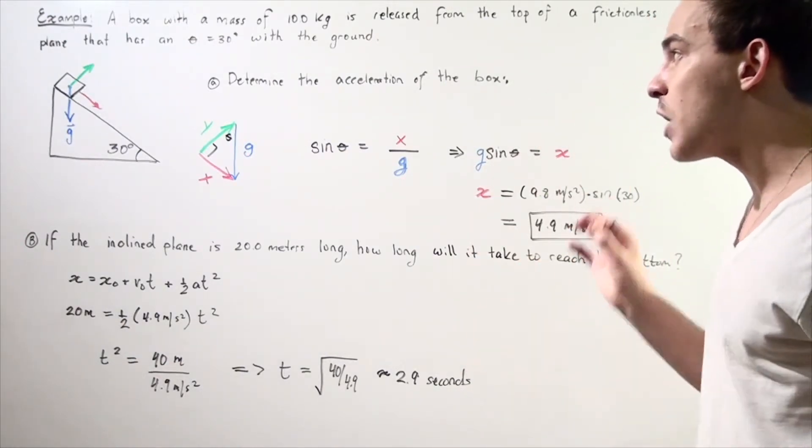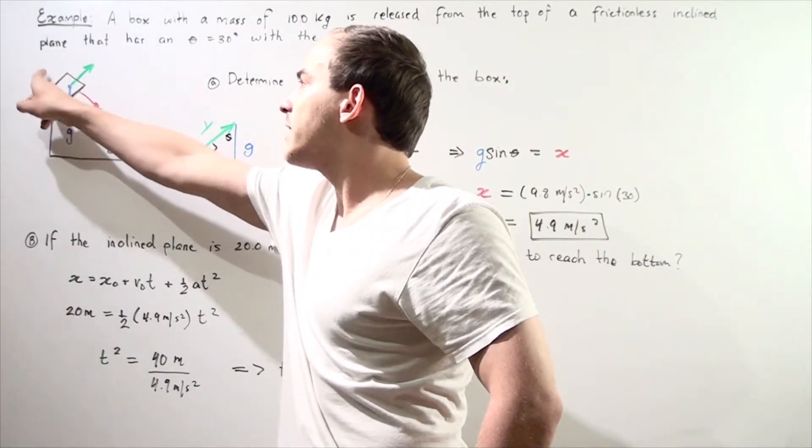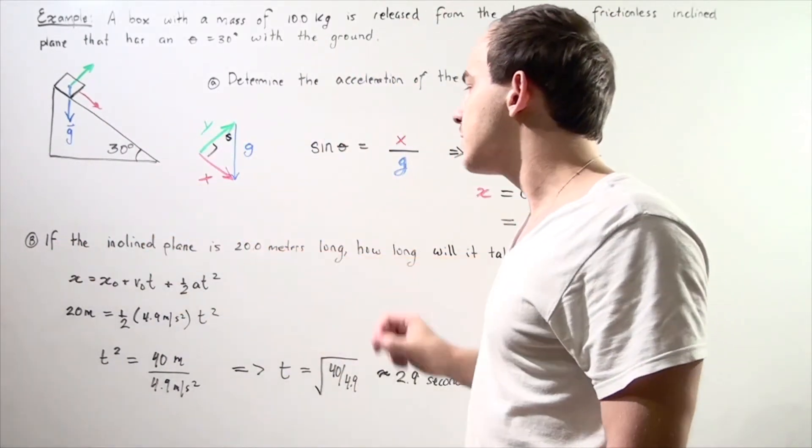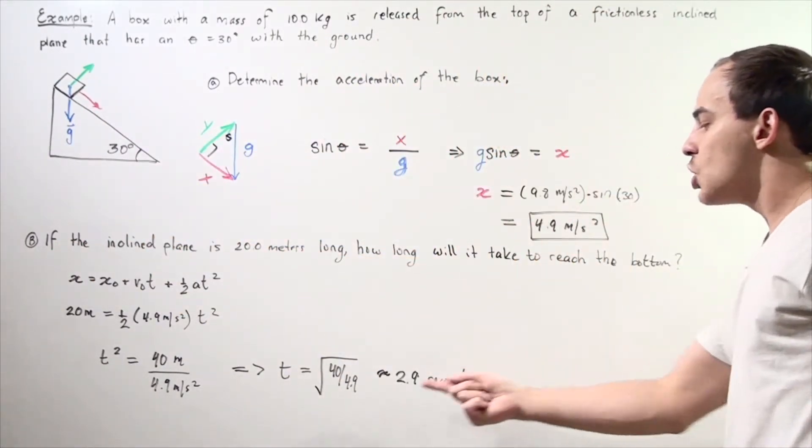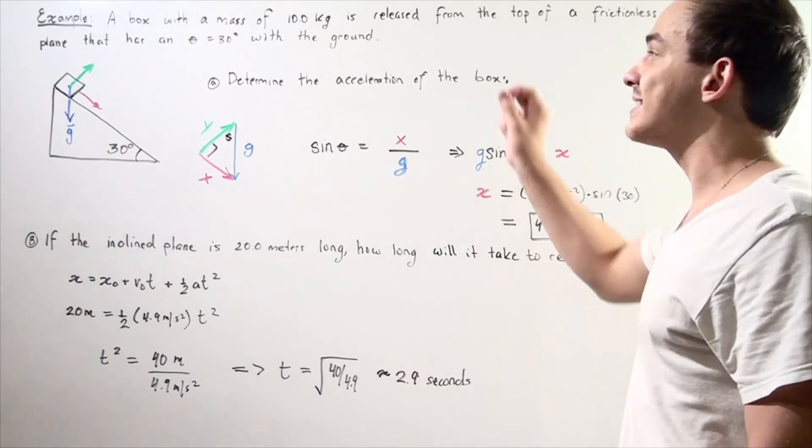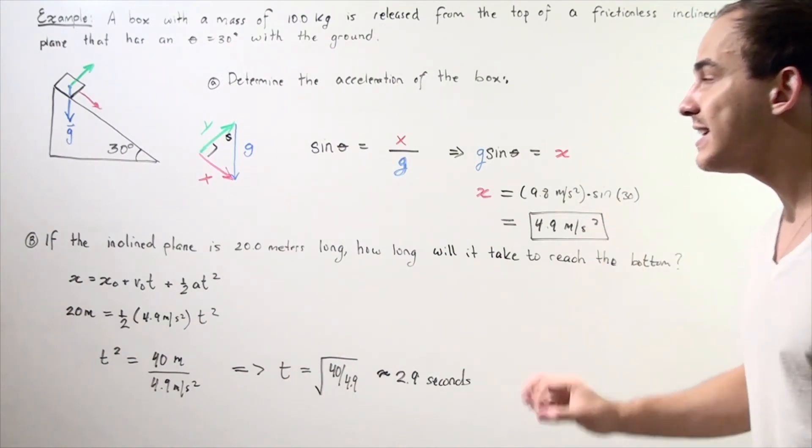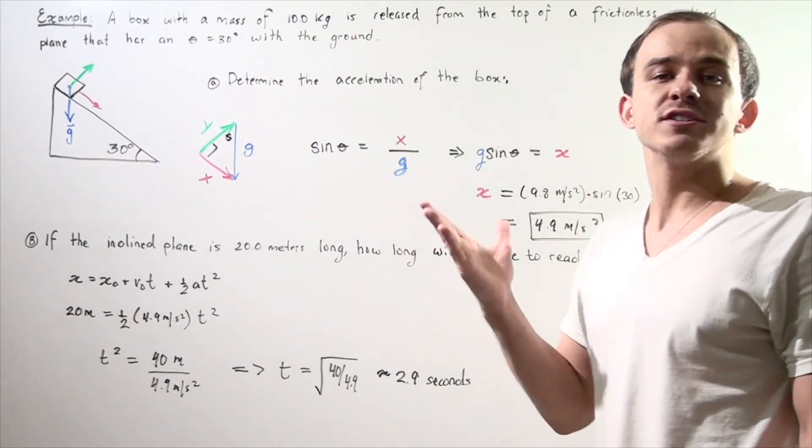So, it takes our box to travel from the tip of our inclined plane to the bottom, a total distance of 20 meters. It takes our box 2.9 seconds, assuming that its acceleration is 4.9 meters per second squared, and the acceleration is, of course, constant.